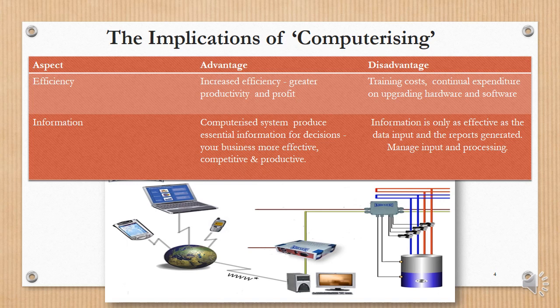With regards to information, a computerized system usually produces better information — more precise, more reliable — and it will help your business be more effective, competitive and productive. But remember that information is only as effective as the data you input. Garbage in, garbage out. You have to manage the input and the processing.